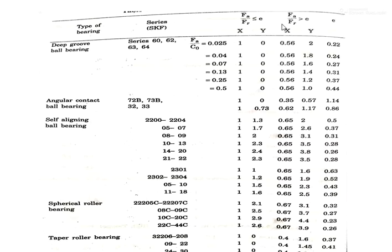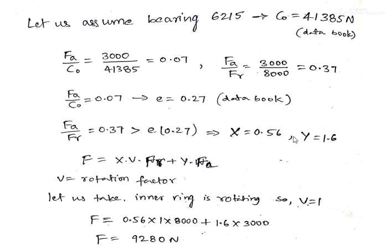Since F_A/F_R = 0.37 is greater than E = 0.27, X and Y values are selected from the corresponding row. Against F_A/C₀ = 0.07, we get X = 0.56 and Y = 1.6. Since nothing is specified about inner or outer race rotation, we assume inner race rotates and take V = 1. Substituting in the equivalent load formula gives F = 9280 N.